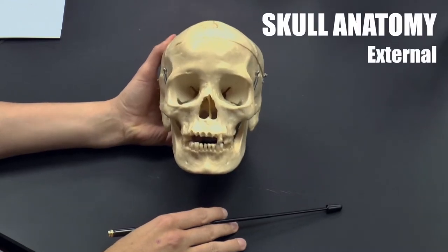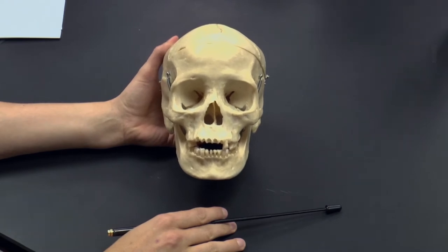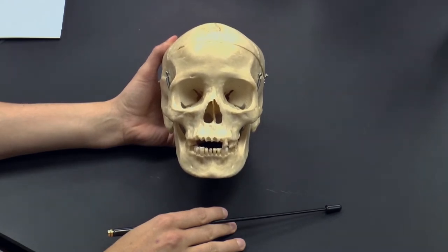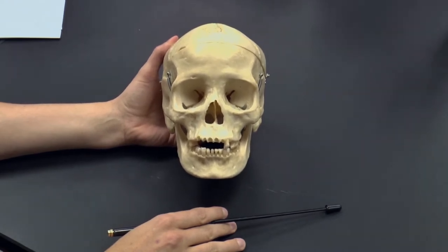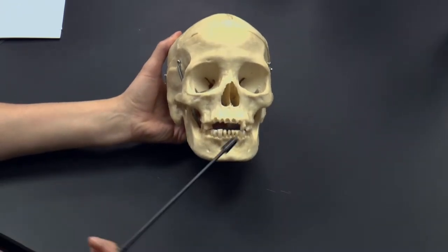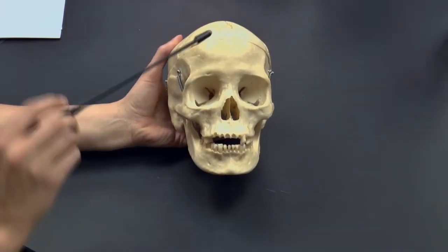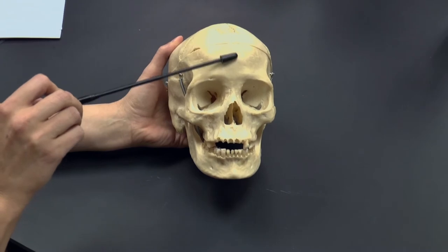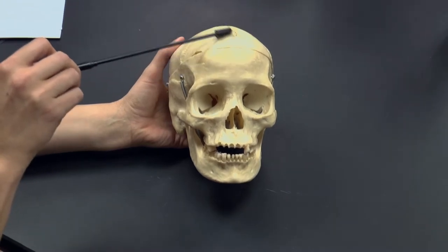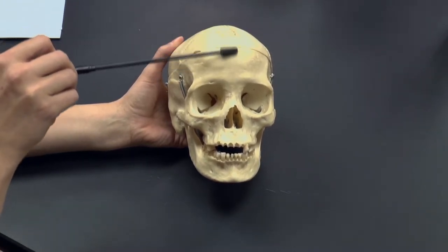We're going to look at the external anatomy of the skull, starting with the bones of the cranial case and the bony parts. This is an anterior view — you know it's anterior because you can see the eyes, nose, and mouth. The first bone of the cranial case, the brain cavity, is the frontal bone.